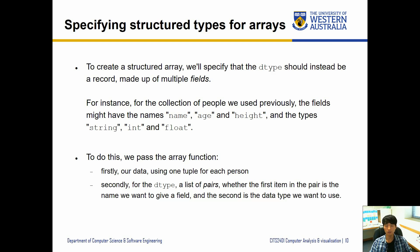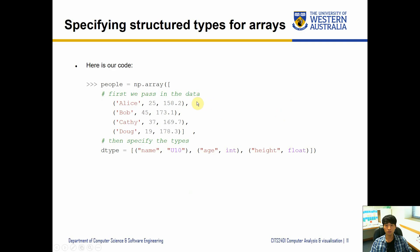This is what it looks like - each tuple contains the record for each person. So Alice age 25 is 158.2 centimeters tall and so forth. This dtype is now not a single value but instead a list. Inside each list we have tuples specifying the name of the record, so 'name' is going to reference the first column of the record, 'age' is the second column, 'height' is the third column.